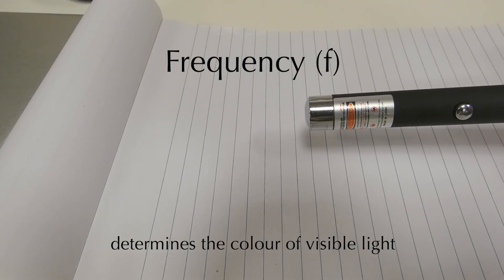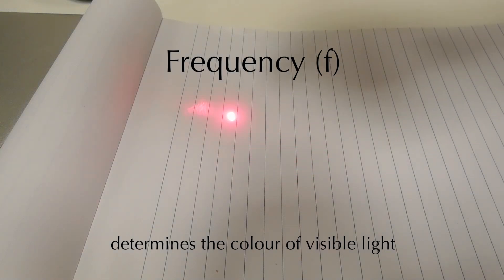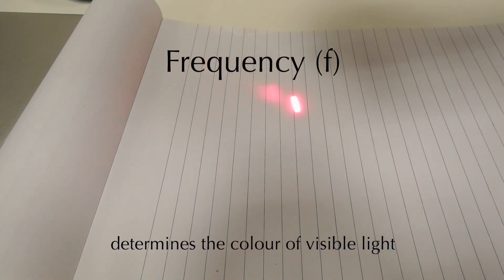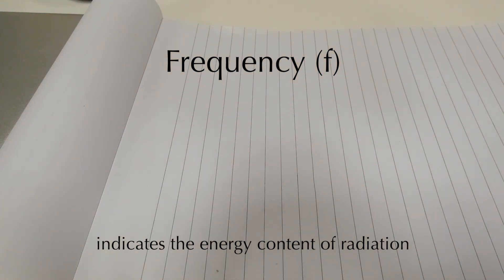The frequency of light determines its colour. Red light is said to have a low frequency compared to blue or violet light. This property is also linked to the amount of energy carried by a beam of light.